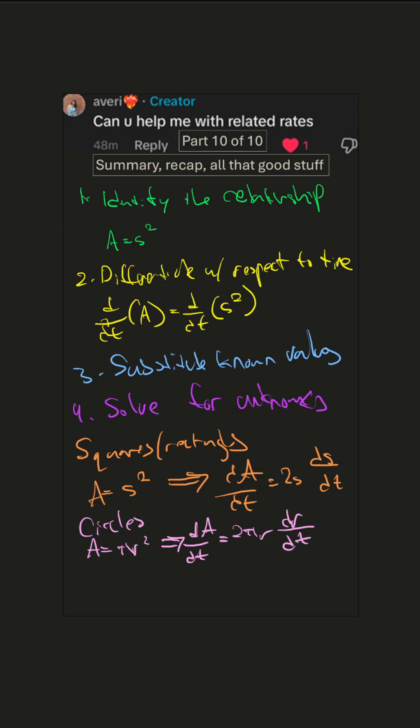And then there are things like ladder problems, Pythagorean theorem. So x squared plus y squared equals L squared turns into 2x dx/dt plus 2y dy/dt equals zero.